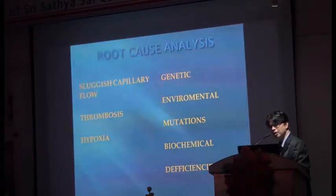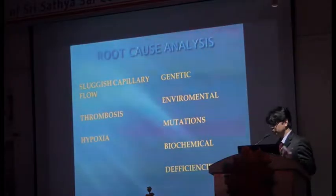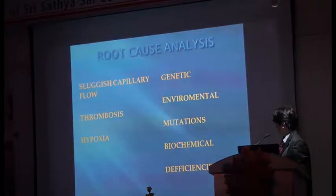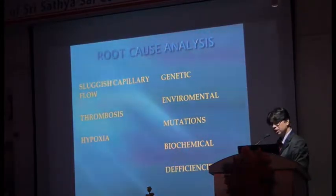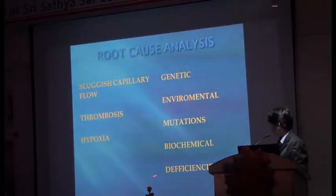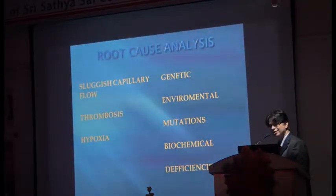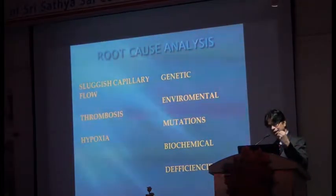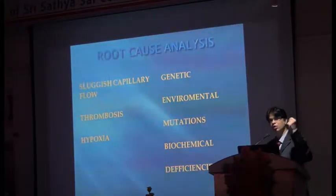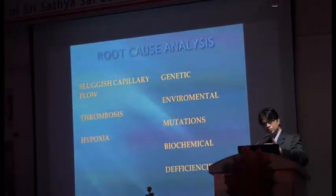What are those mutations? There are so many publications with different mutations, but nothing correlates. At the biochemical level, what is the pathology? And deficiencies — largely neglected. What deficiencies in natural diet can at least predispose to AVN?